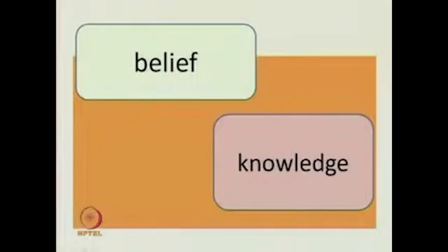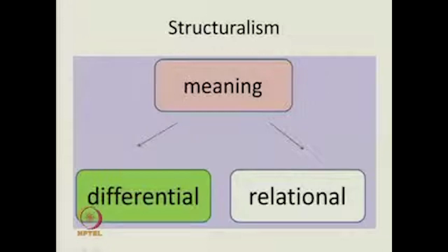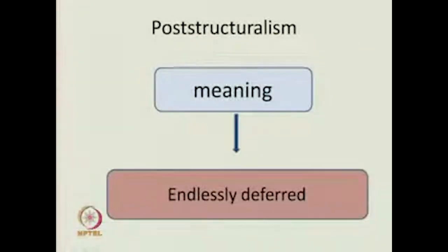We also looked at belief and knowledge, and we said that in epistemology, knowledge is seen as belief that has been justified. Belief by itself, generally speaking, does not qualify to be knowledge unless it is justified. Then we saw that unlike structuralism, which looks at meaning as differential and relational and yet says there can be stable meaning, in post-structuralism, meaning is endlessly deferred. There is an impossibility of arriving at meaning in a final sort of way.